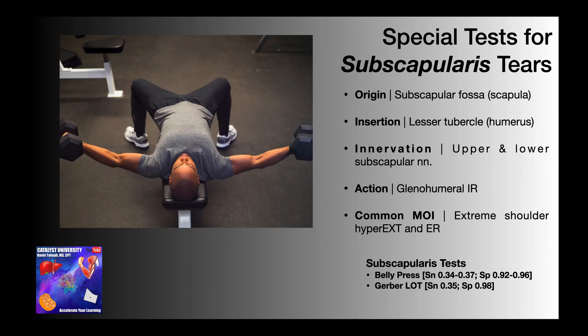The descent phase of a supine pec fly exercise is not pure external rotation. However, large loads coupled with poor muscular control of the movement can lead to a tear of the subscapularis. These tears can be diagnosed by a couple of special tests, which we're going to cover in this video — the belly press test and the Gerber liftoff test.